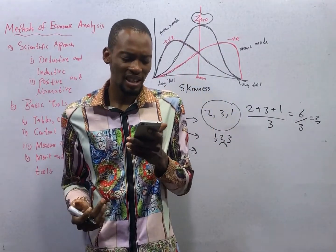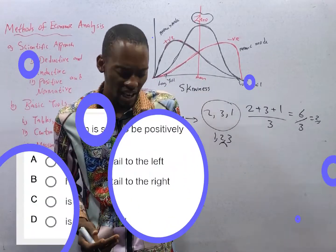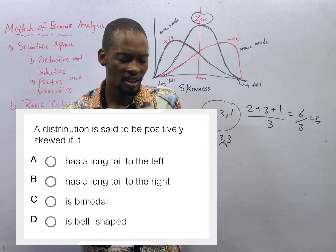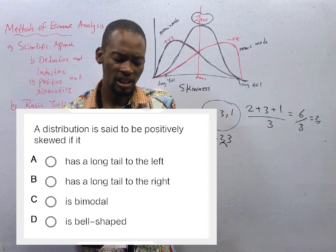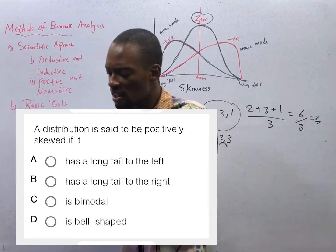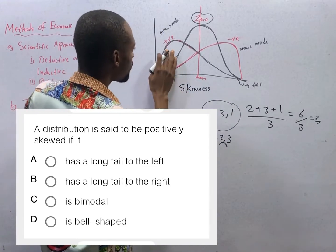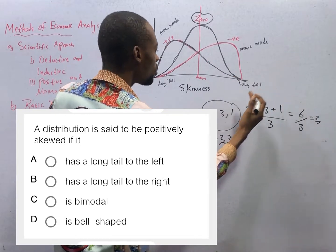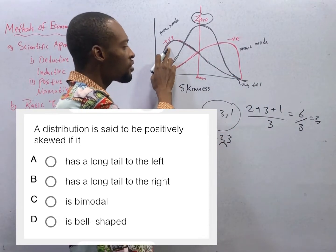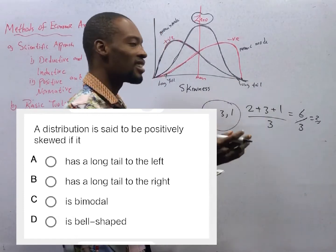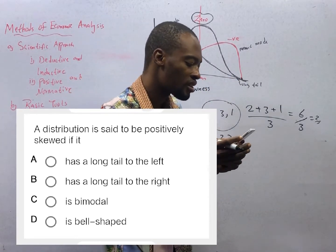The first question here says: A distribution is said to be positively skewed — which option? Option A says has long tail to the left. Positive skewed — no, positive skewed has long tail to the right. Negative has long tail to the left. So option B is correct.